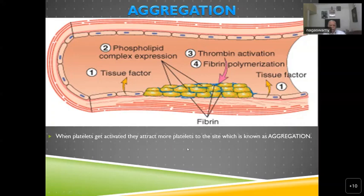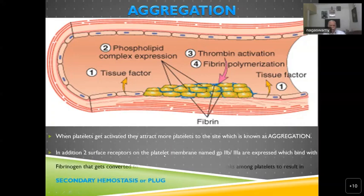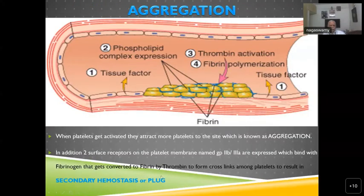When platelets get activated, they attract more platelets and express surface receptors GP2b3a on the platelet membrane. These are the receptors we target when we put a patient on antiplatelet therapy — aspirin, clopidogrel, ticagrelor, or prasugrel — all acting at this particular receptor level, forming a secondary hemostatic plug.